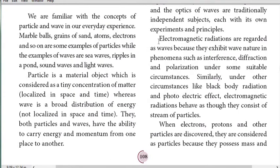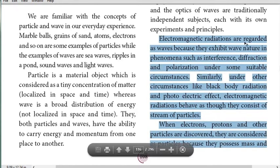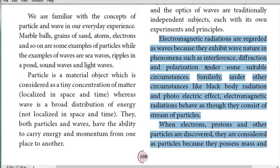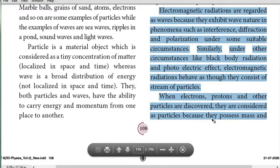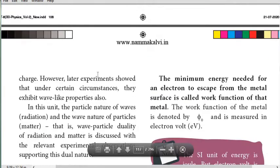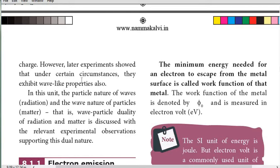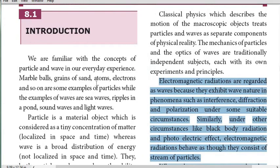In the introduction, we already discussed the important characteristics of dual nature. The first characteristic: electromagnetic radiation is regarded as a wave because it exhibits wave nature in phenomena such as interference, diffraction, and polarization. Under other circumstances like black body radiation and the photoelectric effect, electromagnetic radiation behaves as though it consists of a stream of particles. The second characteristic: when electrons, protons, and other particles were discovered, they were considered as particles because they possess mass and charge. However, later experiments showed that under certain circumstances they exhibit wave-like properties.